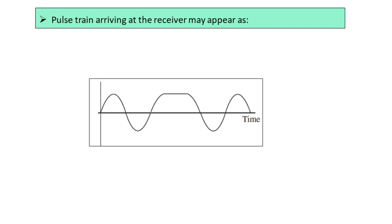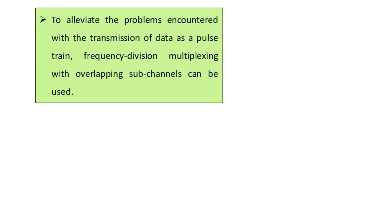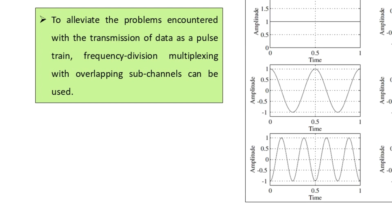To address this problem encountered with pulse train transmission, frequency division multiplexing (FDM) with overlapping sub-channels, discussed in a previous topic, can be an option. In such systems, each binary data sample a_r, where r equals 1, 2, 3 up to N minus 1, modulates a sub-carrier sinusoidal signal cos(2π r t / T), where T is the time period.